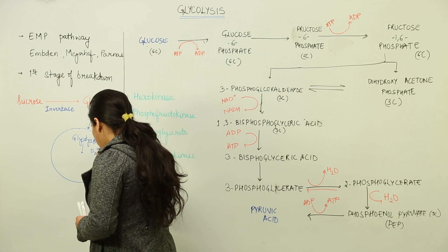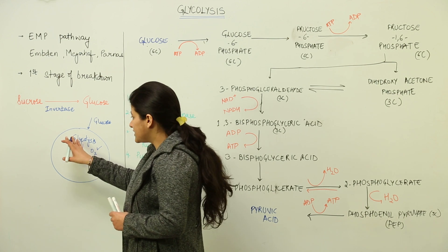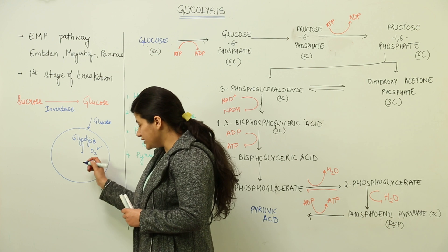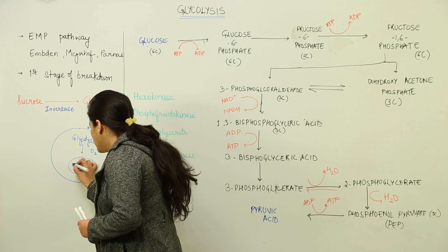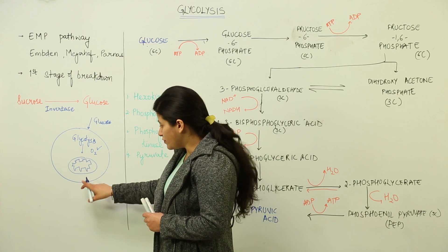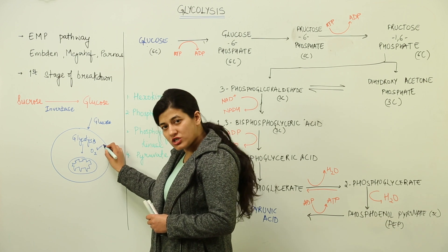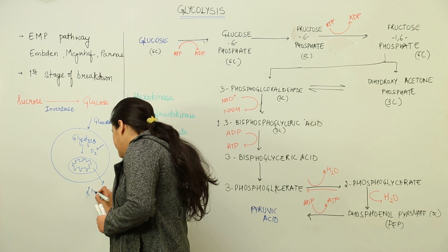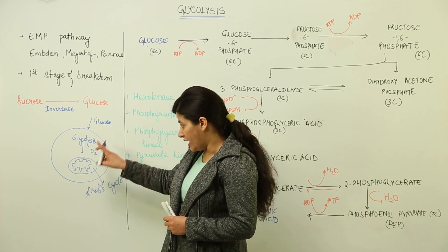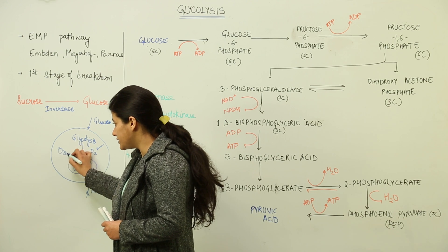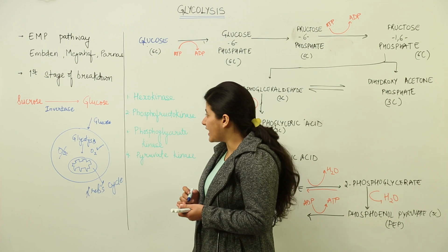After glycolysis, if oxygen is available, the process would have given rise to two molecules of pyruvic acid, and the substrate obtained after glycolysis would move to the mitochondria. Just excuse the rough drawing here — it is to illustrate that after glycolysis, the substrate has to enter the mitochondria if oxygen is provided, and it would undergo the Krebs cycle, otherwise known as the tricarboxylic acid or TCA cycle. If oxygen is absent, the substrate formed after glycolysis would instead enter fermentation, which could be alcoholic or lactic acid fermentation.